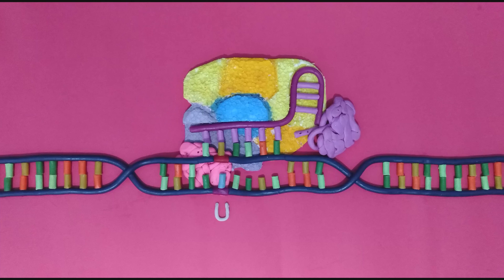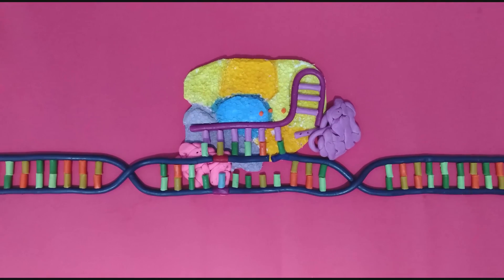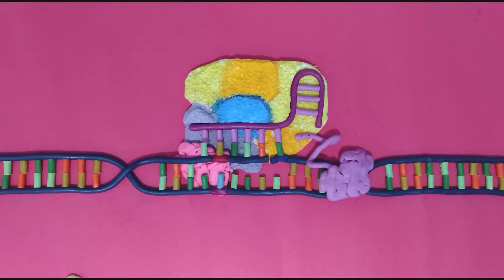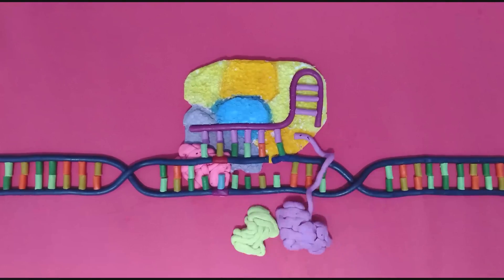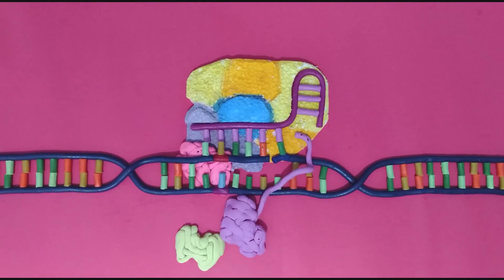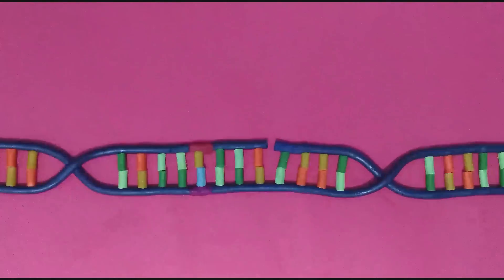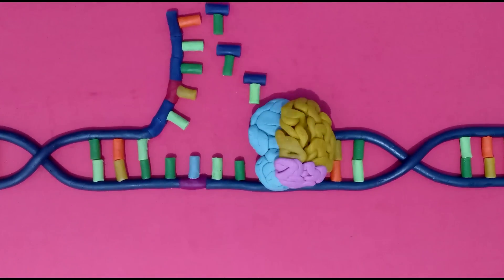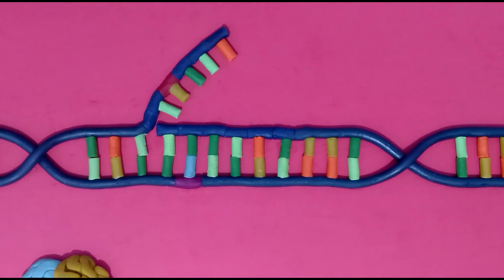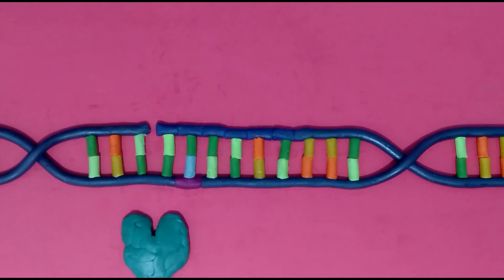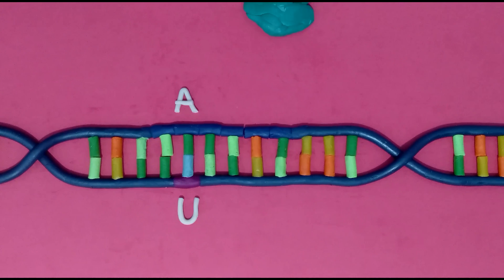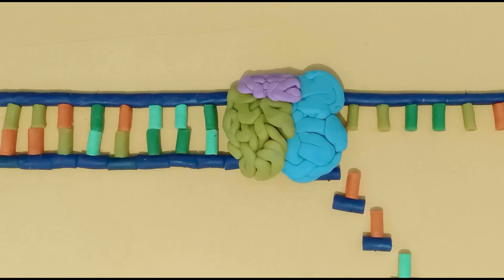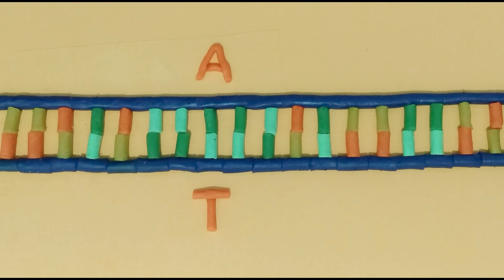Meanwhile, the strand with guanine is cut by nickase and exposed for repair. Changing back to the unwanted original is inhibited by the UGI that protects the uracil from excision. The deaminated strand serves as a template for DNA repair. Opposite to uracil, an adenine is inserted, and thus an exchange from guanine to adenine took place. The uracil is later converted to a thymine by the cell during DNA replication.